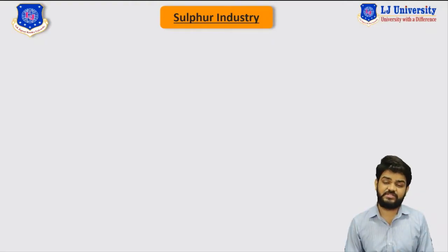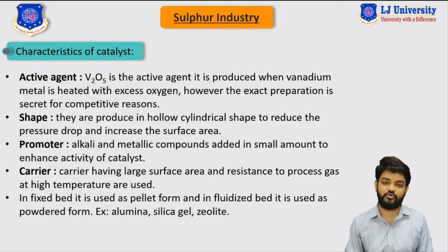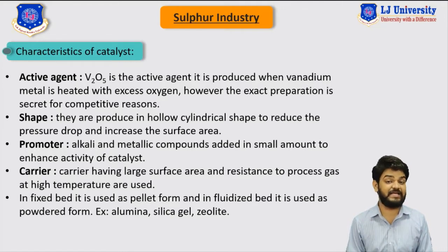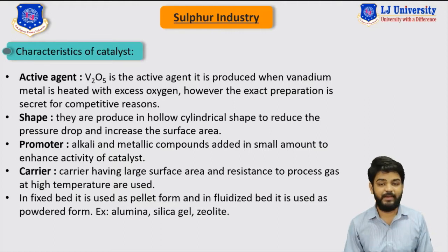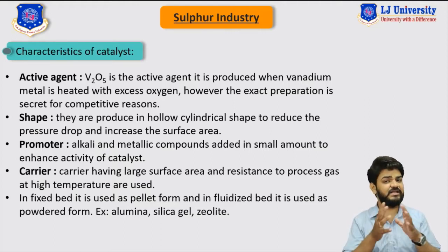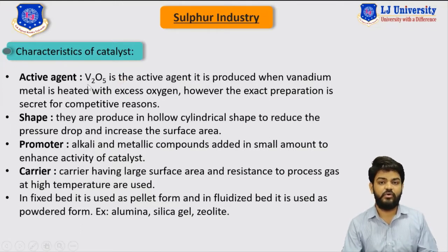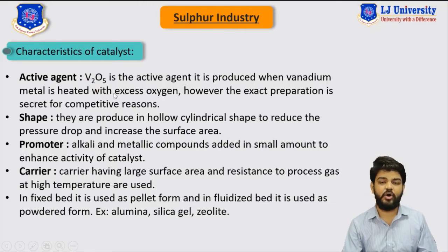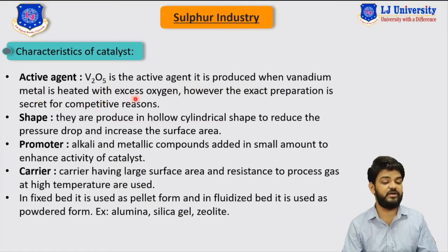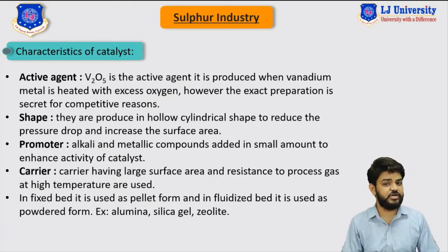Continuing our discussion on the DCDA process, the next topic is the characteristics of the catalyst. We are using vanadium pentoxide as a catalyst to produce sulfuric acid by the DCDA process. The first characteristic is the active agent — vanadium pentoxide is the active agent for this exothermic reaction, and it is produced when vanadium matter is heated with excess oxygen.